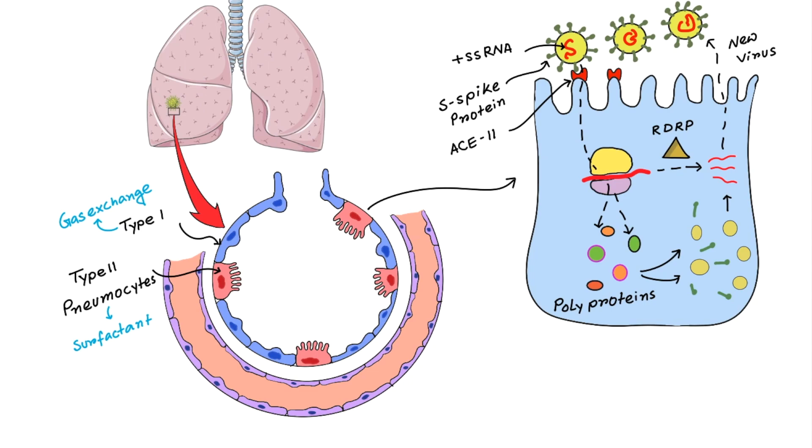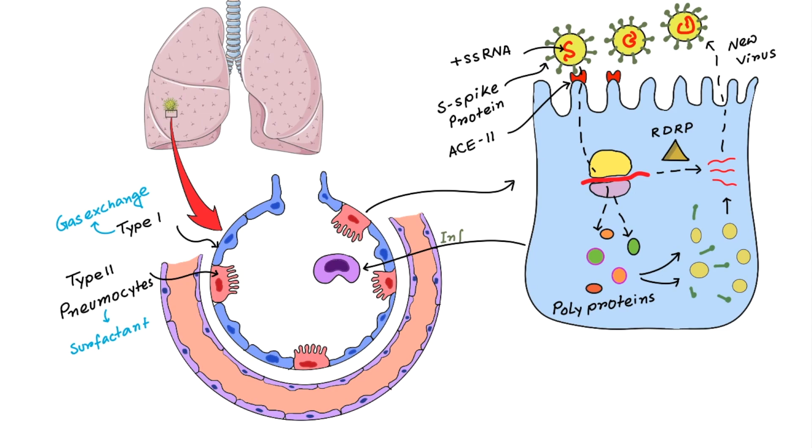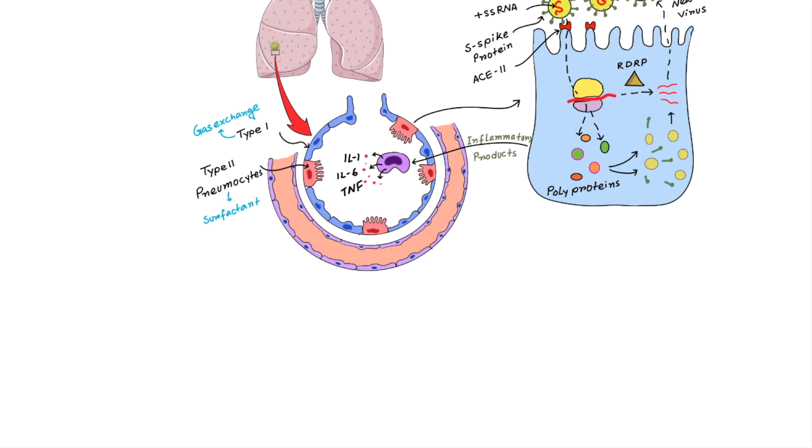As the virus damages type 2 pneumocytes, it can release numerous cytokines and inflammatory products. Those inflammatory products activate alveolar macrophages. Now, these activated macrophages release specific cytokines like interleukin-1, interleukin-6 and tumor necrosis factor. They come into the capillaries surrounding the alveoli and cause capillary smooth muscle relaxation. They are also responsible for endothelial cell contraction and retraction. All those events finally lead to vasodilation and increased capillary permeability.